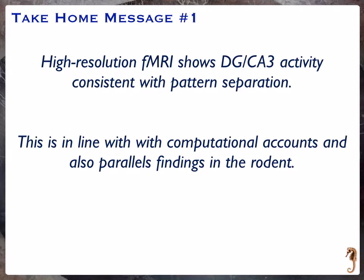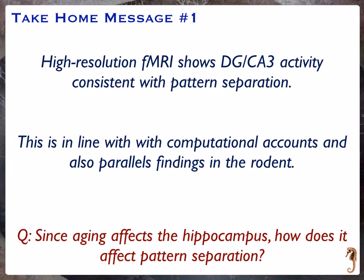The take-home message from part one is that using high-resolution fMRI we can see activity consistent with pattern separation in the dentate/CA3, in line with computational accounts and findings in the rodent. We also have a behavioral task that lets us get at this. In part two, we'll tackle the next question: since aging affects the hippocampus, how does it also affect pattern separation?